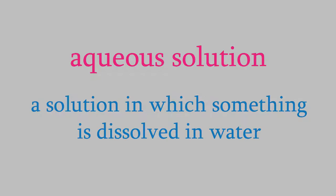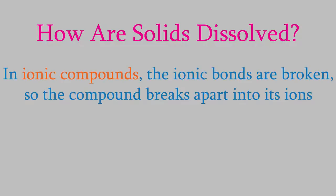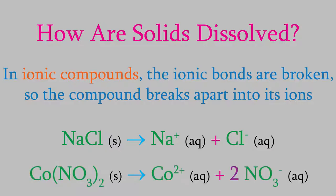So what happens when a compound dissolves in water? It depends on what kind of solid it is. In ionic solids, the ionic bonds are broken, so the compound breaks apart into its cations and anions. For example, sodium chloride breaks apart into sodium+ ions and chloride− ions. If we dissolve cobalt(II) nitrate, we get a cobalt 2+ ion and 2 nitrate ions.